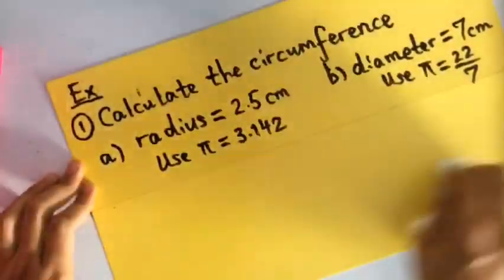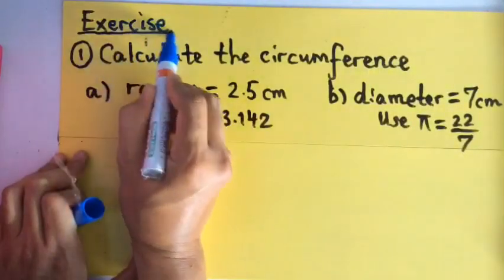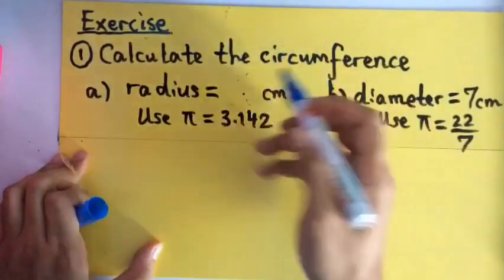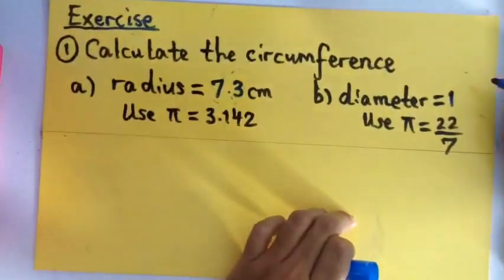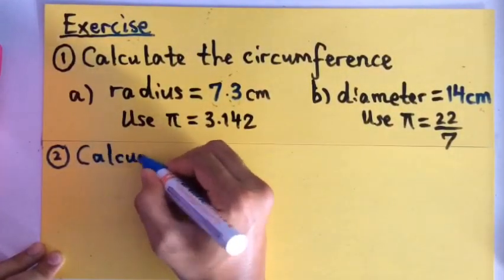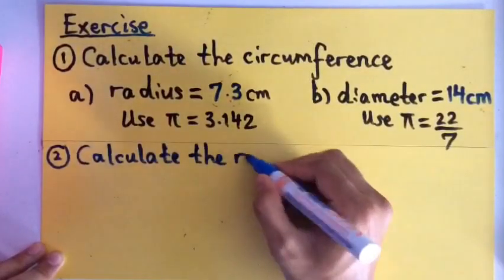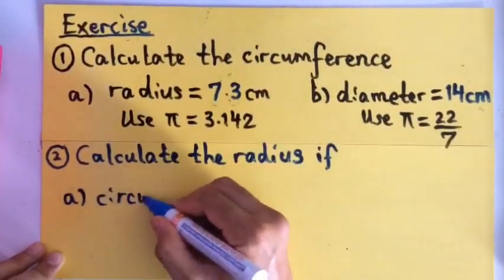Now I'm giving you the exercise. Can you copy into your books? I'm just going to amend the value from my example. I'll change a little bit there and there. This is my first question. My second question will be, I want you to find the value of the radius if I give you the circumference value.